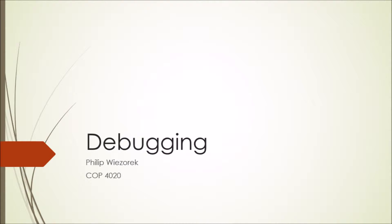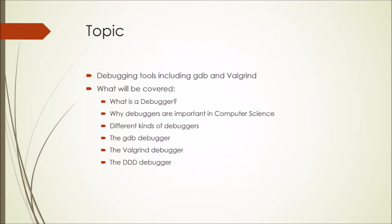All right, once again, my name is Philip Weinsrich, and my topic is debugging, including the Valgrind debugger and GDB. During this presentation, I'll go over a few different topics, including what is a debugger, why debuggers are important in computer science, the different kinds of debuggers — specifically GDB and Valgrind — and also the DDD debugger, which is one that I found while doing research for this project.